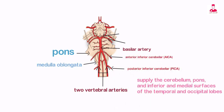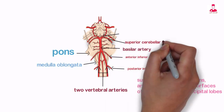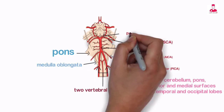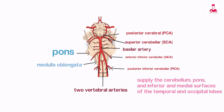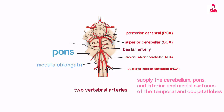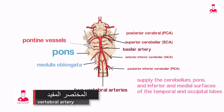Anterior inferior cerebellar, AICA. Superior cerebellar, SCA. And posterior cerebral, PCA. Located between the anterior inferior cerebellar artery and superior cerebellar artery are many tiny perforating pontine vessels.